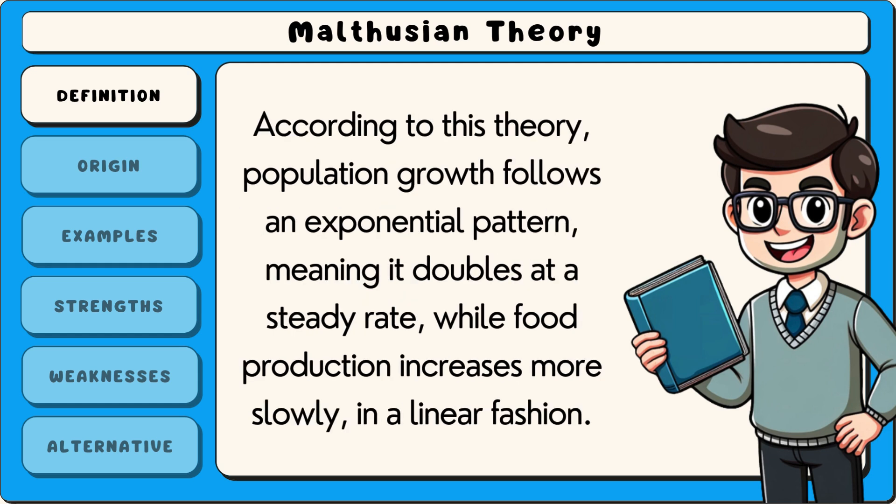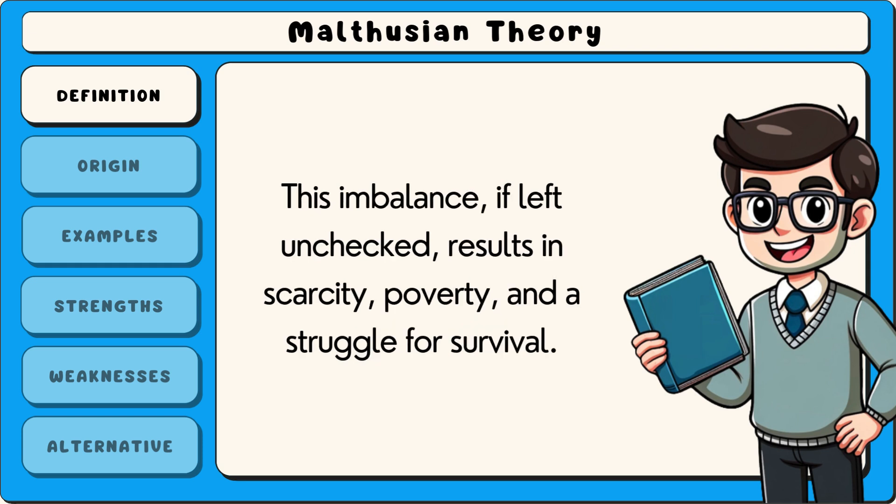According to this theory, population growth follows an exponential pattern, meaning it doubles at a steady rate while food production increases more slowly in a linear fashion. This imbalance, if left unchecked, results in scarcity, poverty and a struggle for survival.